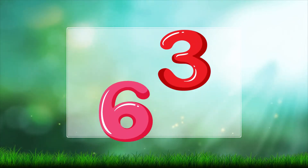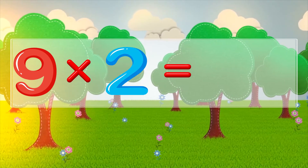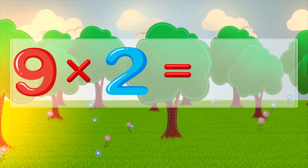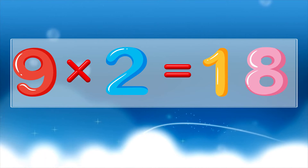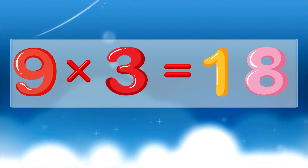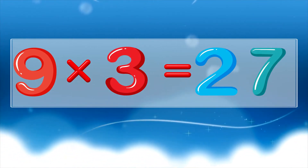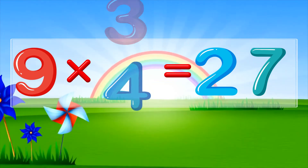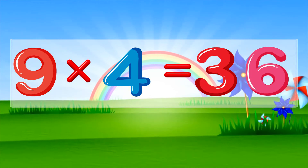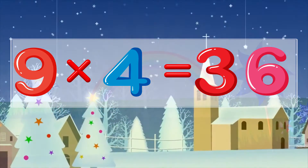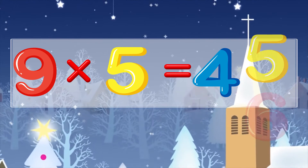Let's sing again. Nine times two is eighteen. Nine times three is twenty-seven. Nine times four is thirty-six. Nine times five is forty-five.